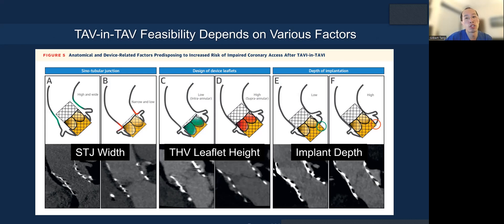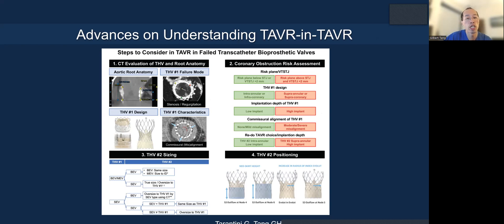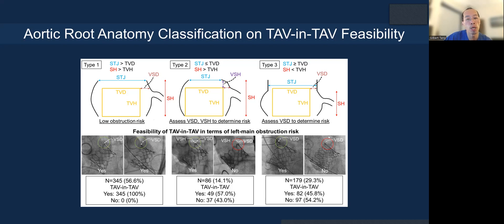Redo TAVR visibility is determined not just by commissure alignment but also by sinotubular junction width — you don't want to seal off the aortic root completely with the neo-skirt — the THV leaflet height, and the implant depth of the first transcatheter valve. A state-of-the-art review on redo TAVR in JACC Interventions outlines steps for assessing coronary obstruction risk and sizing/positioning considerations. Even for balloon expandable valves, a certain percentage of patients may not be feasible for redo TAVR because the frame rises above the STJ, particularly in Type 3 roots. Even shorter frame valves require root classification assessment for feasibility.